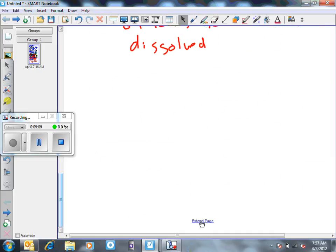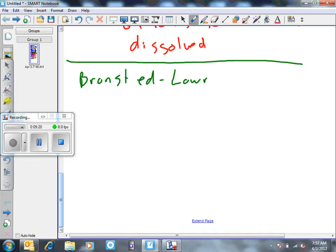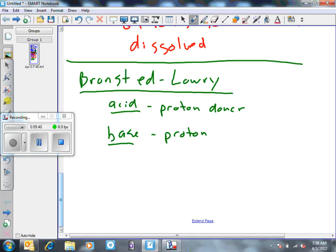So now we've talked about the Arrhenius acid. Now we have to talk about the Bronsted-Lowry definition. So the Bronsted-Lowry definition, and you have this in your notes I'm sure, already besides this, if you did your assignment. The acid in a Bronsted-Lowry, it's considered a proton donor, and the base then is considered a proton acceptor.